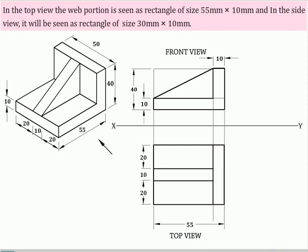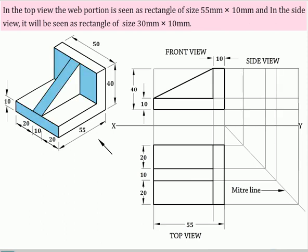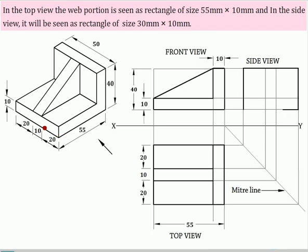To draw the left side view, draw the miter line and draw the projectors horizontally from the front view and through the miter line from the top view. Now complete the left side view. In the left side view, the web portion will be seen as a rectangle of size 30mm by 10mm.